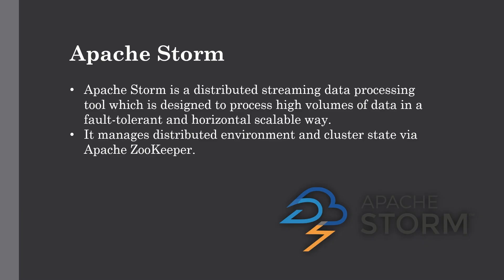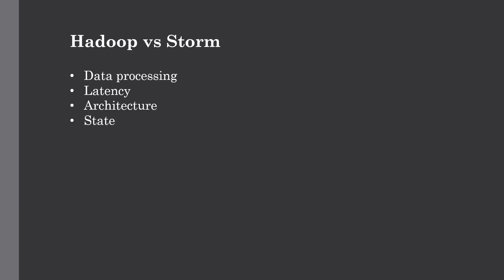Even though Storm is stateless, which we are going to see shortly, Apache Storm uses ZooKeeper as part of its architecture. Now let's discuss in detail about its components and architecture. But before going forward, let's first talk about the difference between Hadoop and Apache Storm. Basically, Hadoop and Storm are both used for analyzing big data — they complement each other but have differences in various aspects. The first difference is data processing: Hadoop is suitable for batch processing.